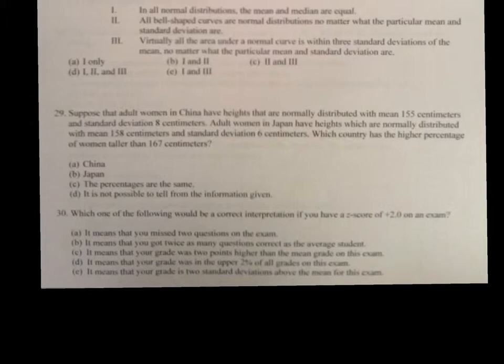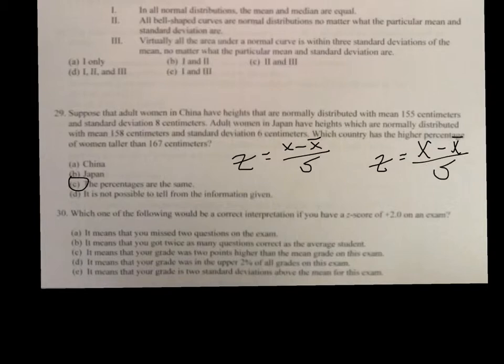Now, number 29, what it's really asking you to do is, which country has the higher percentage of women taller than 167? If you will find the Z score on both of them, remember, X minus X bar over standard deviation. If you'll do that for both of them, X minus X bar over standard deviation, you will find that the percentages are going to be about the same. On number 30, which of the following would be a correct interpretation? If you have a Z score of plus 2, that means it's two standard deviations to the right or above the mean. So, that's going to be answer E.